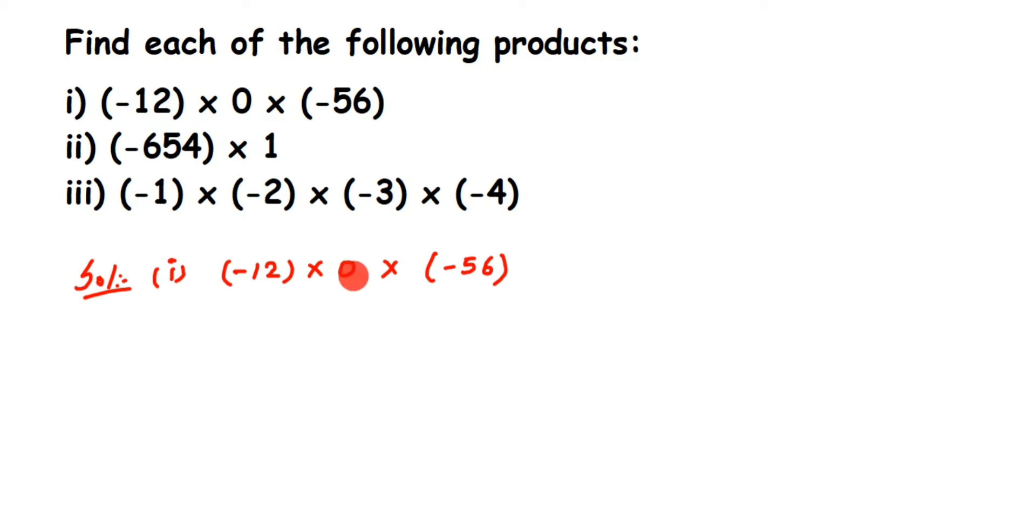Now second question: minus 654 multiplied by 1. So whenever you multiply any number with 1, you get the same number. So we'll get minus 654, along with negative sign. There's only one negative sign, so 1 is an odd number, so you're going to have a negative sign.